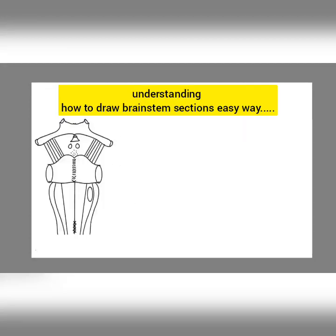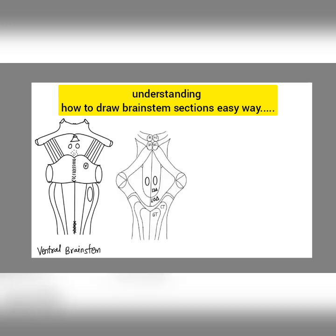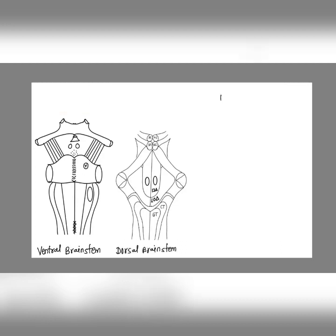Hello friends, let us learn how to draw the brainstem sections. For this you need to watch the previous video of ventral brainstem and dorsal brainstem external features. To understand the sections, you must know that the section will be passing through the ventral part and the dorsal part of the brainstem at the same time, and you have to correlate the structures accordingly.